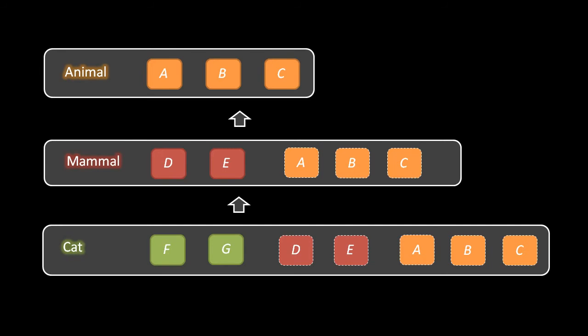An important thing to get straight is the terminology for the relationships between classes. In this example, we would say that Mammal and Cat are subtypes of Animal, and Cat is a subtype of Mammal. Conversely, Animal is a supertype of Mammal and Cat, and Mammal is a supertype of Cat. Alternatively, instead of saying subtype we could say descendant, and instead of supertype we could say ancestor. So Animal is an ancestor of Cat, and Cat is a descendant of Animal.